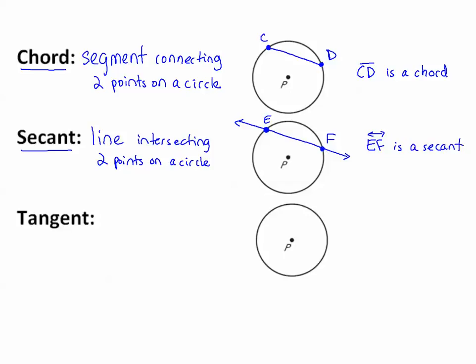Notice that a chord and a secant look very much like each other, but a chord is a segment while a secant is a line. So a chord and a secant, almost the same thing, but they are segments and lines. Then we have a tangent.